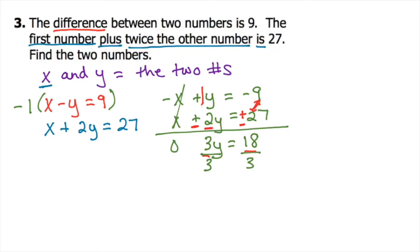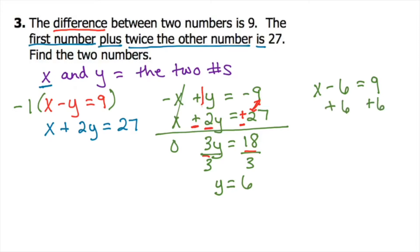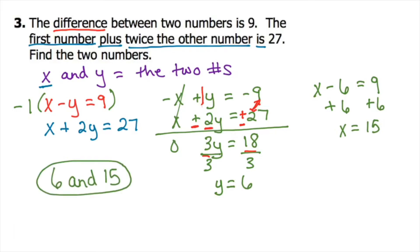Divide by 3 on both sides and you get y equals 6. Take that 6 and plug it back into the first equation. Since the variable is by itself in the first equation, you can just add 6 to both sides and you get x equals 15. So the two numbers we're looking for are 6 and 15.